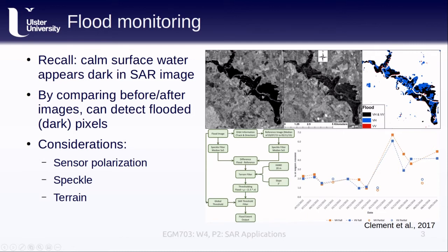Finally we can also consider the terrain, as this study did. By considering only pixels that are likely to be flooded — i.e. not at the top of a mountain — we can cut down on the false classifications.